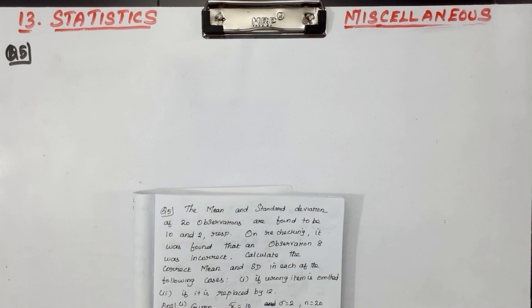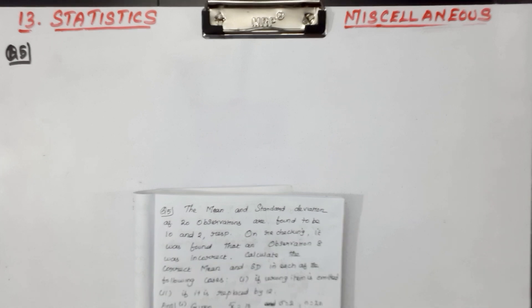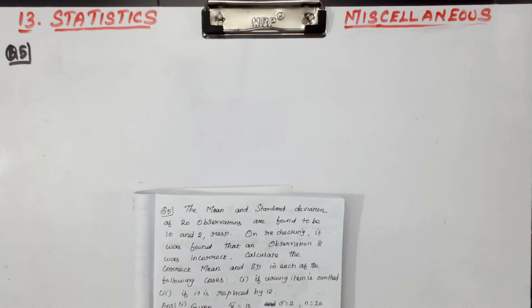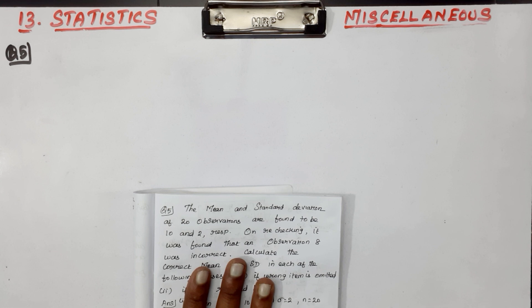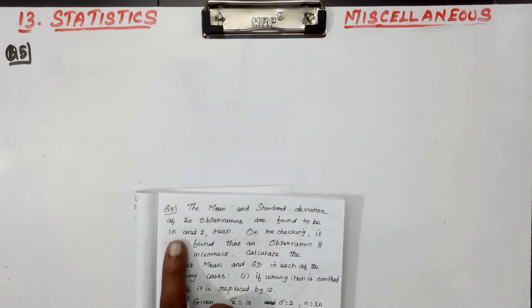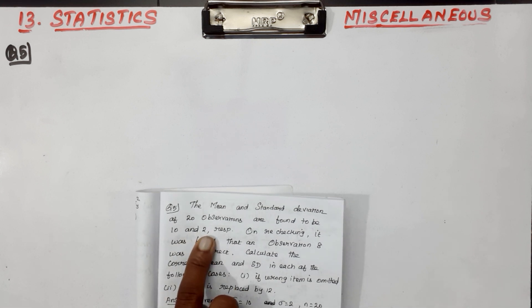So the question is: what did you do? There are 2 conditions. The question is, mean — how to do it? Mean is 10, standard deviation is 2, n is 20.